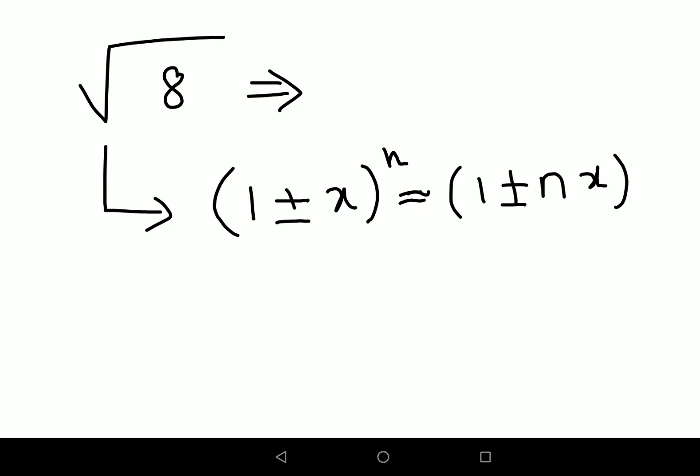So now here, this 8, what we'll do is we'll write 8 as something in the form of a perfect square plus or minus some value. I can write this as nothing but 9 - 1. Now what happens is I will have to take—I want this first term to be 1—so I will take 9 outside. So I'll get 1 - 1/9, and everything is still under a root.